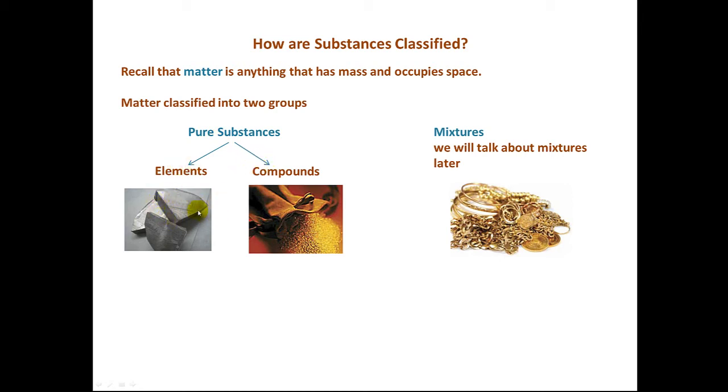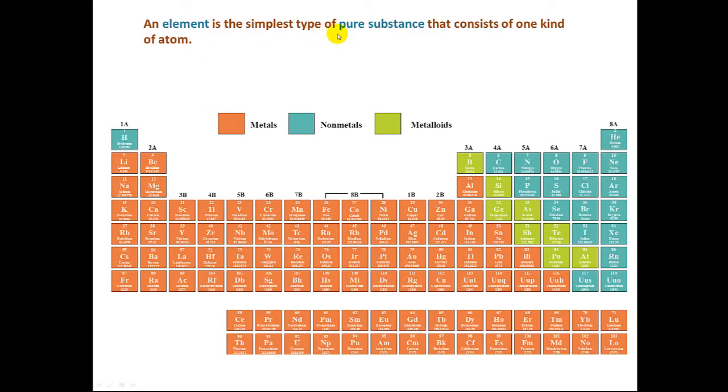Pure substances can be elements or compounds. Here we have an example of an element, pure sodium metal. And here we have an example of a compound, calcium carbonate, which is a major component of seashells. An element is the simplest type of pure substance, and elements consist of one kind of atom. All of the elements are listed here on the periodic table.